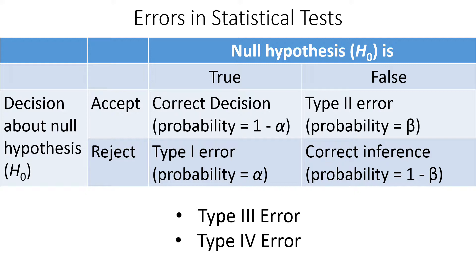Whether it's going to rain or not, you calculate this probability based on the data, and then according to your set criteria you say whether you're going to invest or not. When you make a decision to either accept or reject, you are basically taking one side based on probability. There is always a chance that the other thing might happen, and in that case you're making a mistake.